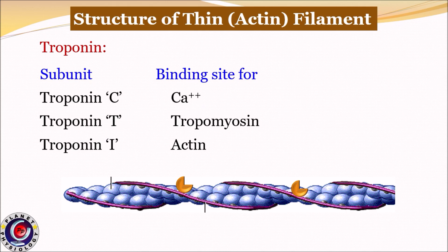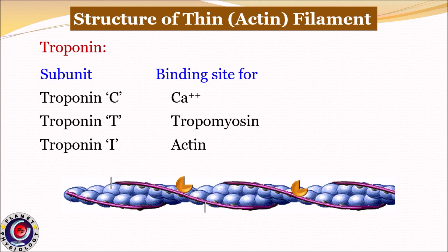The third protein in the actin filament is troponin. It is a complex of three loosely bound protein subunits: troponin T, troponin I, and troponin C. Troponin I attaches to actin, troponin T attaches to tropomyosin, and thus it helps to maintain their proper position with respect to each other. Troponin C has a binding site for calcium ions, which plays an important role in the initiation of muscle contraction.